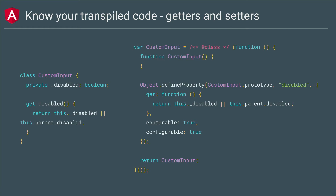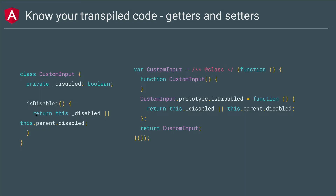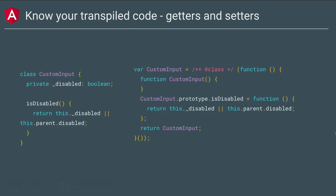What you can do instead is use a function rather than a getter, which is more or less half the size. This doesn't mean you should stop using getters and setters altogether, but it's something to consider when writing your API. For example, if it's just a private method, you might benefit from this approach.